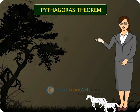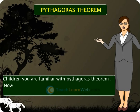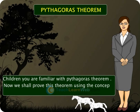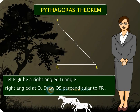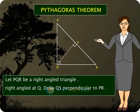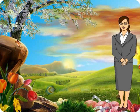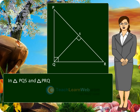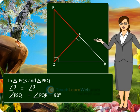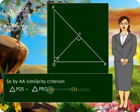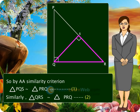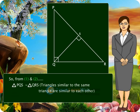Pythagoras Theorem. You are familiar with Pythagoras theorem. Now we shall prove this theorem using the concept of similarity of triangles. Let PQR be a right-angled triangle, right angled at Q. Draw QS perpendicular to PR. Proof: in triangle PQS and triangle PRQ, angle P equals angle P, and angle PSQ equals angle PQR equals 90 degrees. So by AA similarity criterion, triangle PQS is similar to triangle PRQ. Similarly, triangle QRS is similar to triangle PRQ. From these results, triangle PQS is similar to triangle QRS.